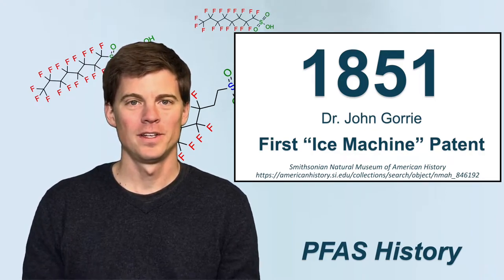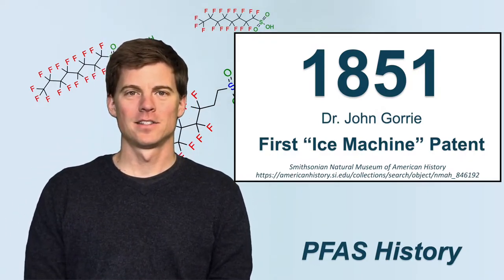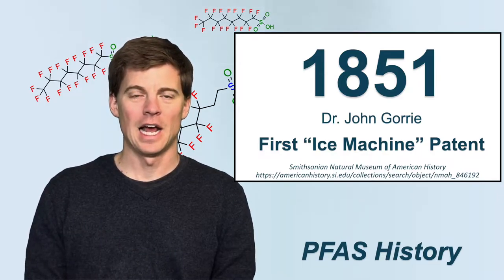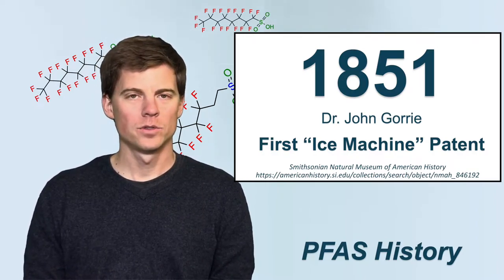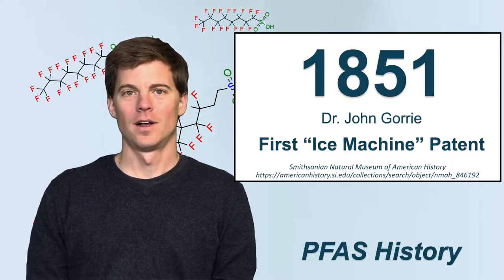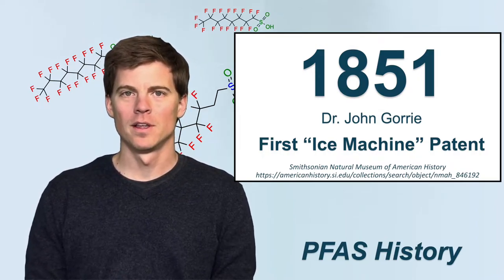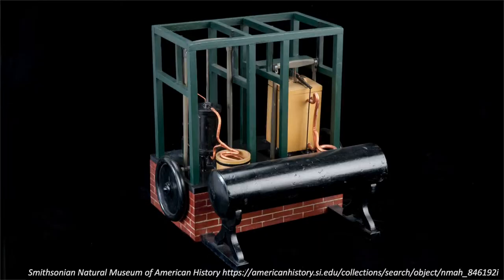Skipping ahead to 1851, Dr. John Gorrie first patented the ice machine. He was a physician who wanted to practice medicine in the tropics, where they needed ice to treat things like malaria. But how do you get ice in the tropics? So he invented this ice machine. He didn't really know how to handle the refrigerant, but it had a compressor and an expansion chamber, similar to how modern refrigerators work. He envisioned using things like ammonia — not fluorochemicals yet in 1851. This is a picture of what his refrigerator looked like: a wooden frame with bricks and a compressor, meant to be steam-powered. Very steampunk.